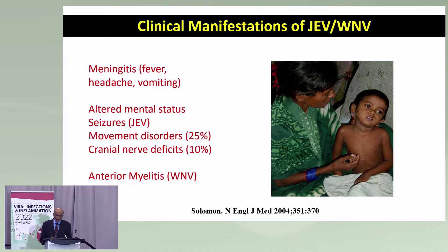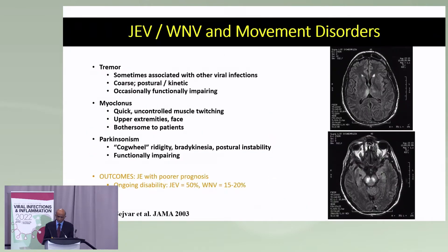The clinical manifestations of these viruses often present with meningitis, altered mental status associated with seizures. As I mentioned, they involve the basal ganglia, so you can see a variety of movement disorders, and it can affect the spinal cord as well. Depending on what part of the basal ganglia is involved, they can manifest in many different ways — something neurologists find most interesting.